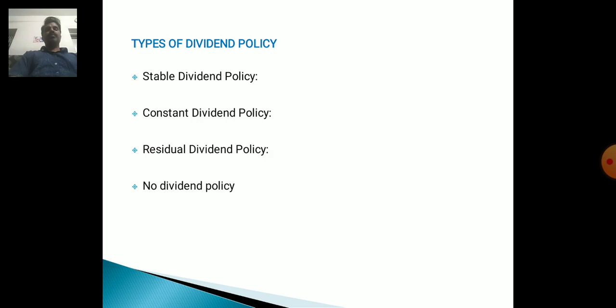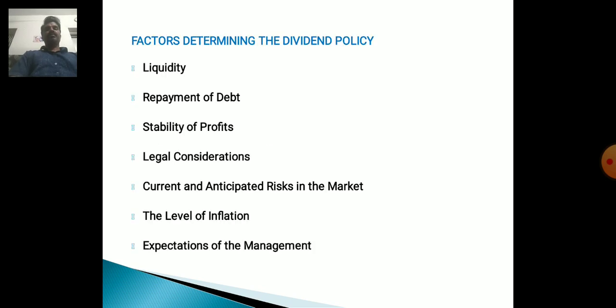Types of Dividend Policy: Stable Dividend Policy, Constant Dividend Policy, Residual Dividend Policy, and No Dividend Policy.